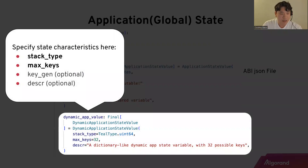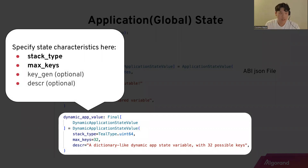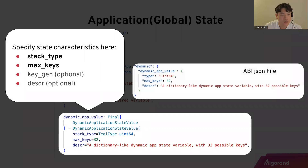There's also a DynamicApplicationStateValue — a dictionary-like state value that can contain multiple key-value pairs. It has four characteristics: stack_type, max_keys, keygen, and description. For example, stack_type=TealType.uint64 means the value must be uint64, and max_keys=32 means a maximum of 32 key-value pairs can be stored. This is also exposed to the ABI so the frontend knows the type, the maximum number of key-value pairs, and the description.